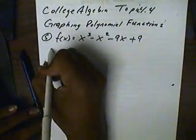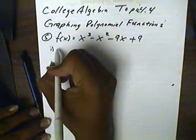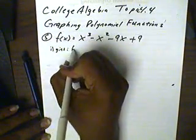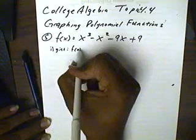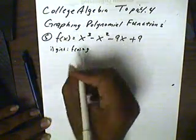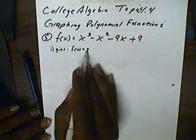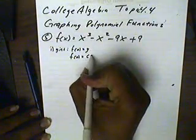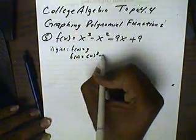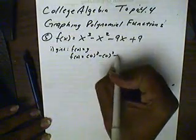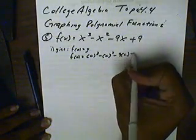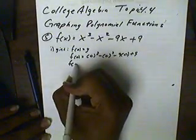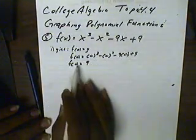First, we're going to find the y-intercept. We find the y-intercept by taking the function and setting x to zero, then we look at our final answer. We set x to zero, so this will be zero to the third power, minus zero squared, minus nine times zero, plus nine. This simplifies down to nine.